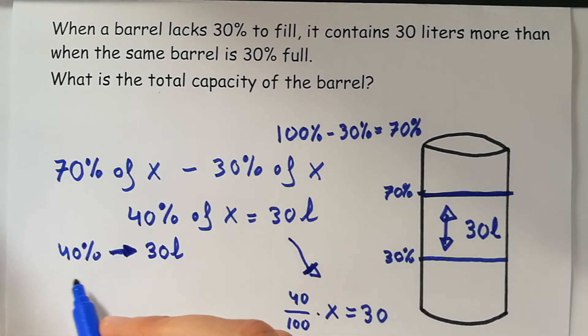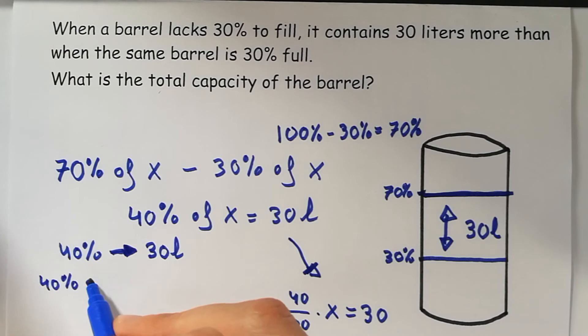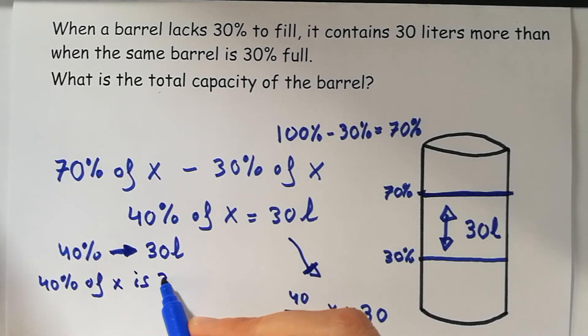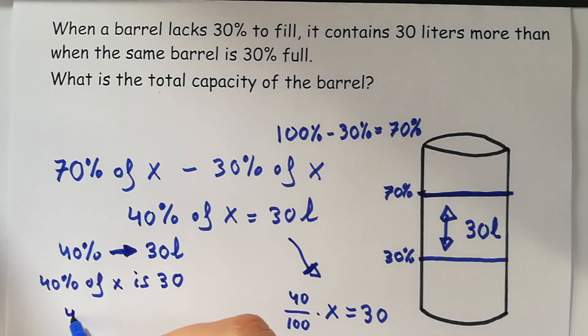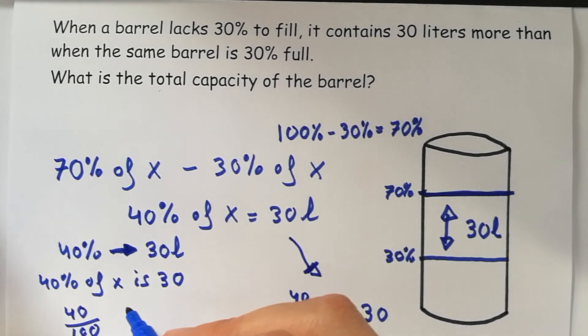And here we would use proportions, because we say the 40% of something we don't know is 30, and this is the same as 40 is to 100, the same as 30 is to X.